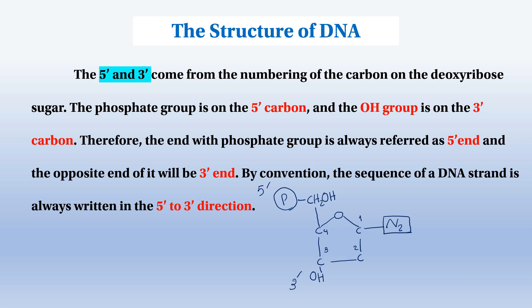The 5-prime and 3-prime designations come from the numbering of carbons on the deoxyribose sugar. The phosphate group is on the 5-prime carbon and the OH group is on the 3-prime carbon. Therefore, the end with a phosphate group is always referred to as the 5-prime end and the opposite end is the 3-prime end. By convention, the sequence of a DNA strand is always written in the 5-prime to 3-prime direction.